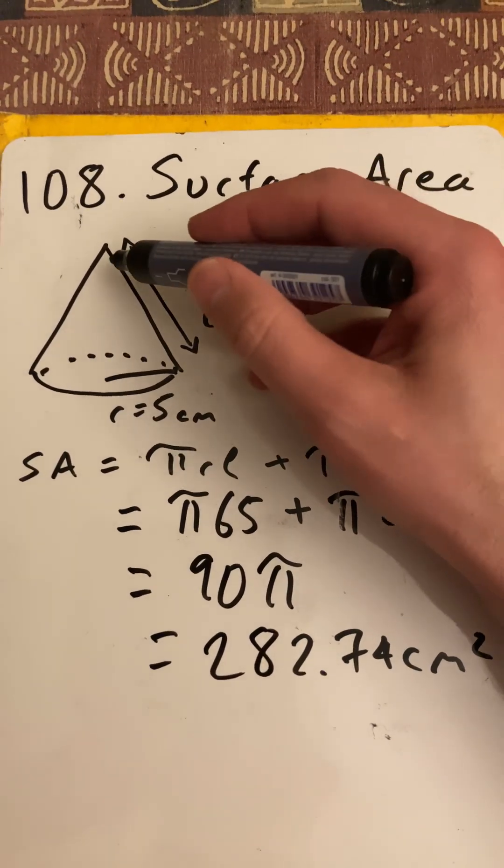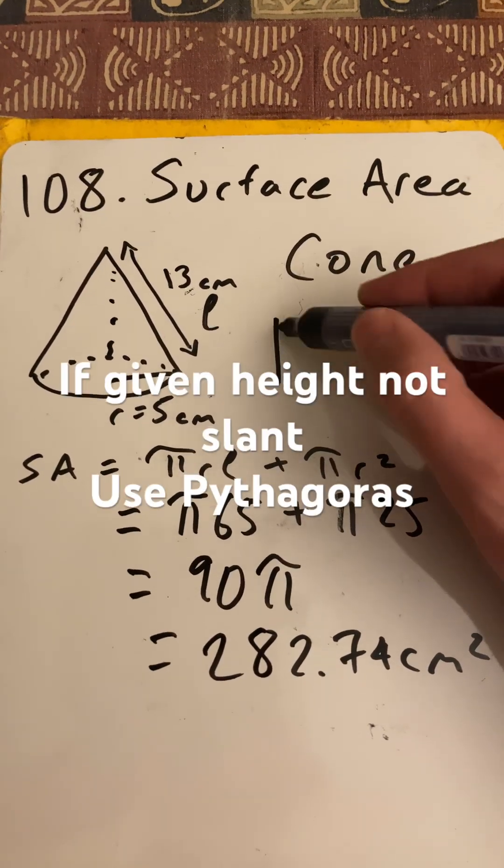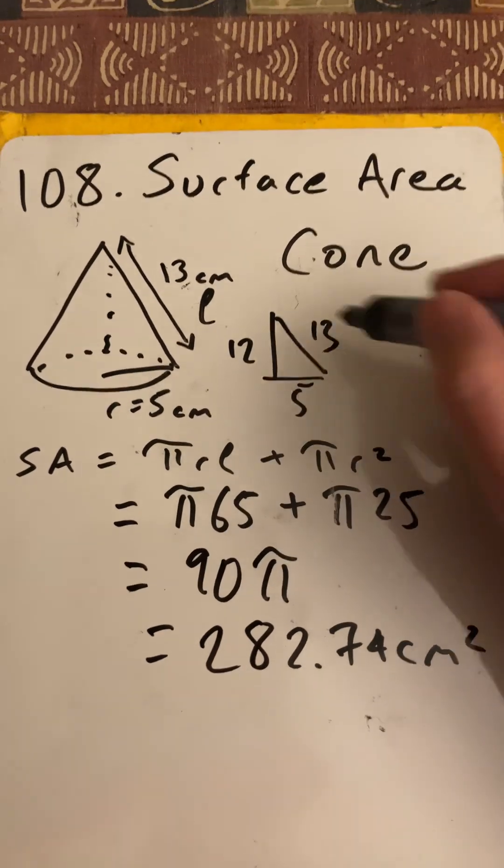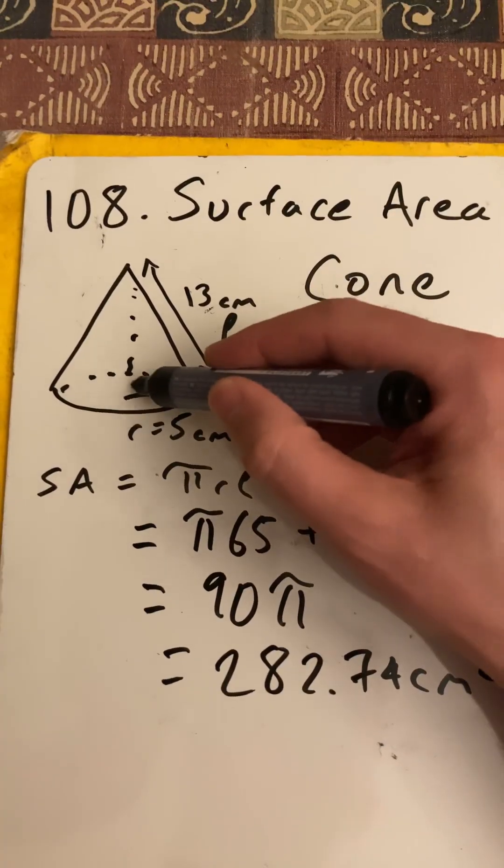Now, we could have worked that out if they'd given us the height, because I've chosen numbers that make a Pythagorean triple. 5, 12, 13.